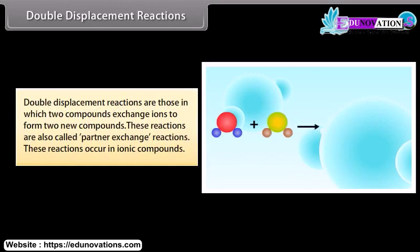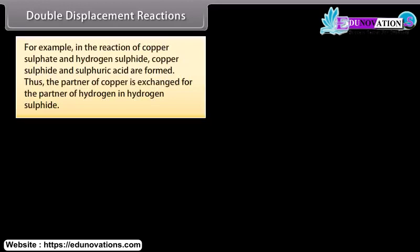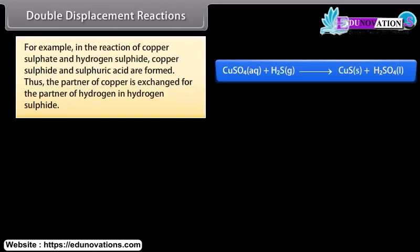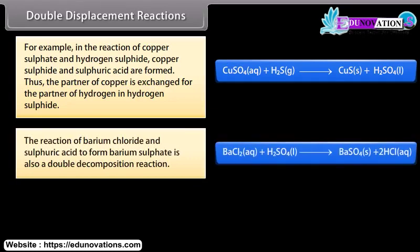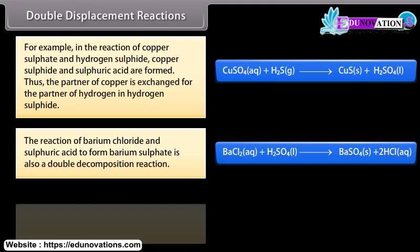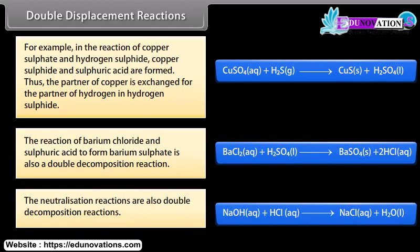Double displacement reactions are those in which two compounds exchange ions to form two new compounds. These reactions are also called partner exchange reactions. These reactions occur in ionic compounds. For example, in the reaction of copper sulfate and hydrogen sulfate, copper sulfate and sulfuric acid are formed. Thus, the partner of copper is exchanged for the partner of hydrogen in hydrogen sulfate. The reaction of barium chloride and sulfuric acid to form barium sulfate is also a double composition reaction. The neutralization reactions are also double decomposition reactions.